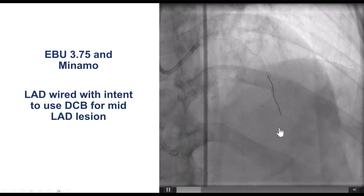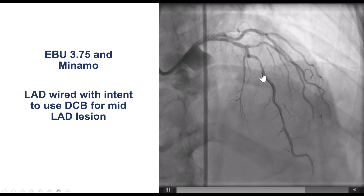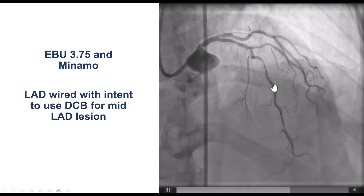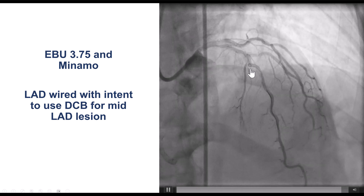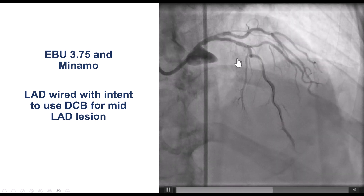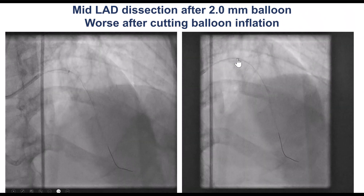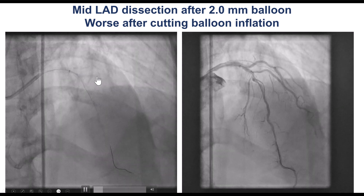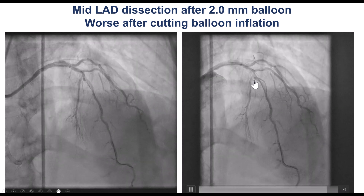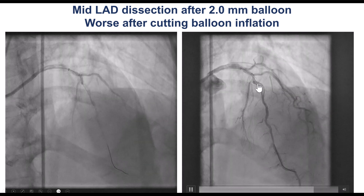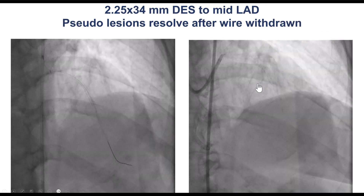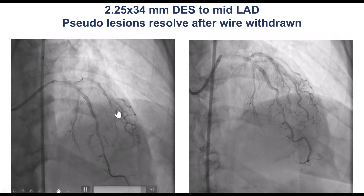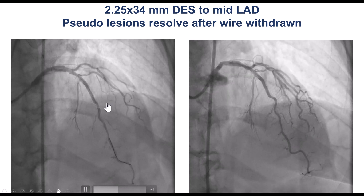We wired the lesion and the intent was to use a drug-coated balloon given the small size of the vessel. But after predilatation, we had a dissection — so clearly a stent was needed. We placed a 2.5 drug-eluting stent, and that gave a nice result.